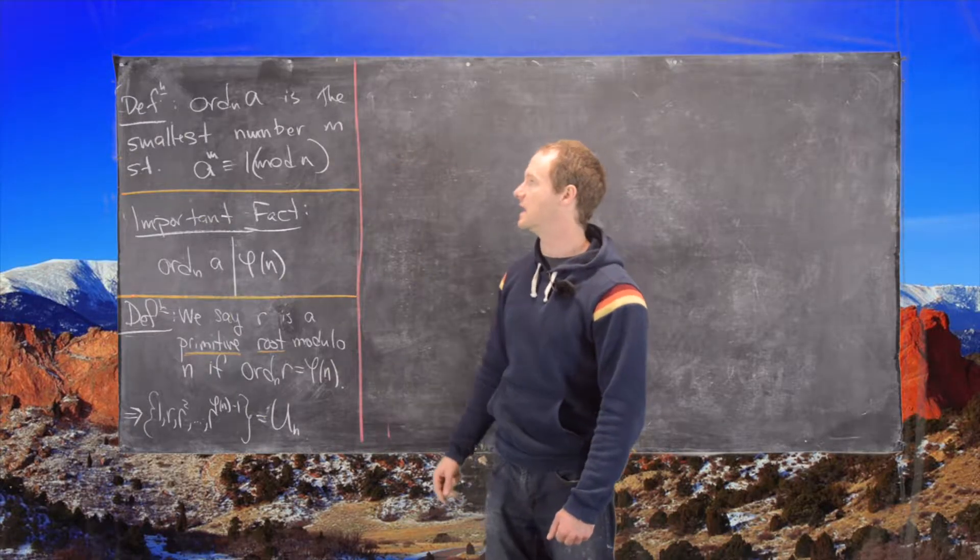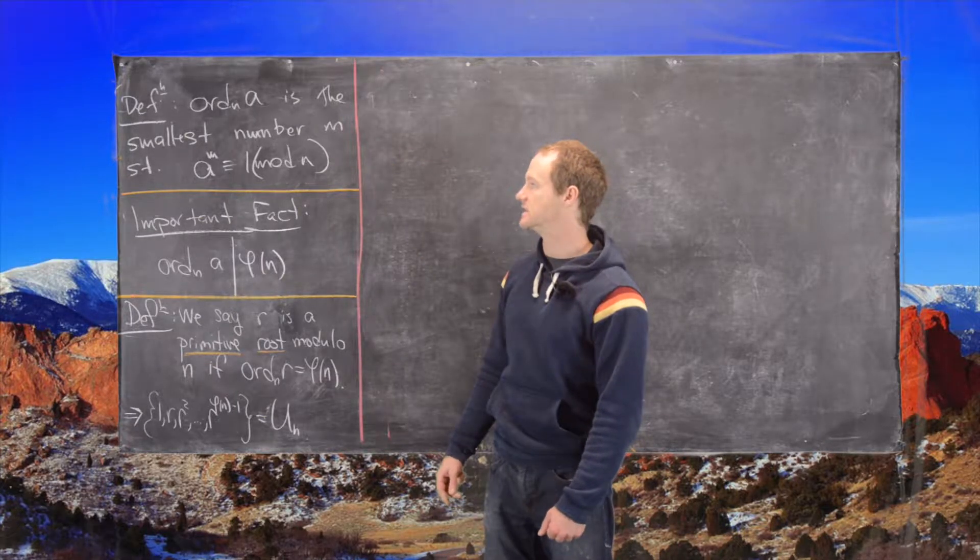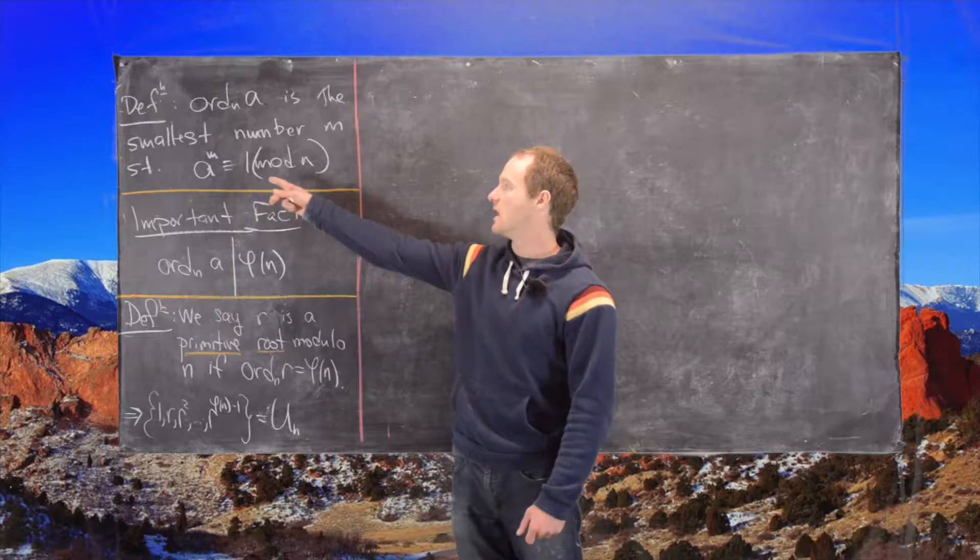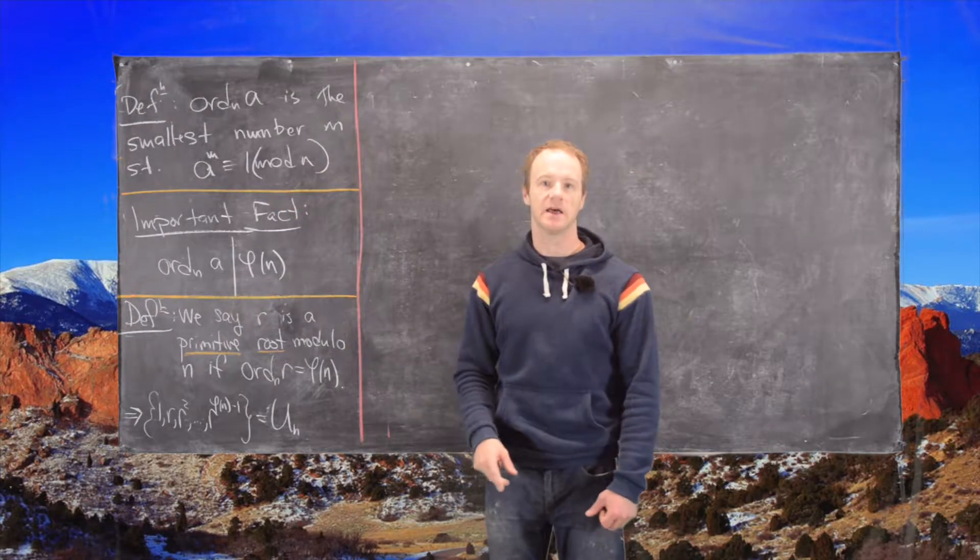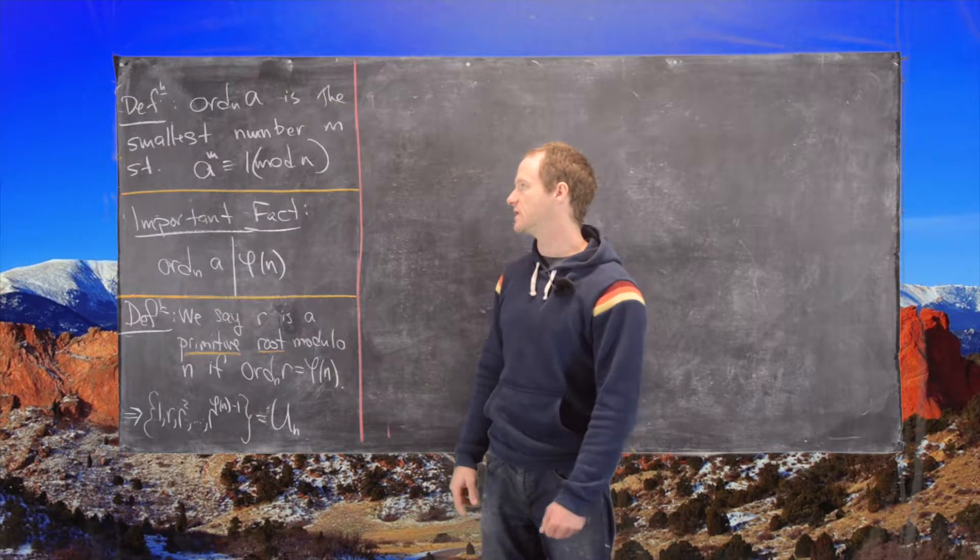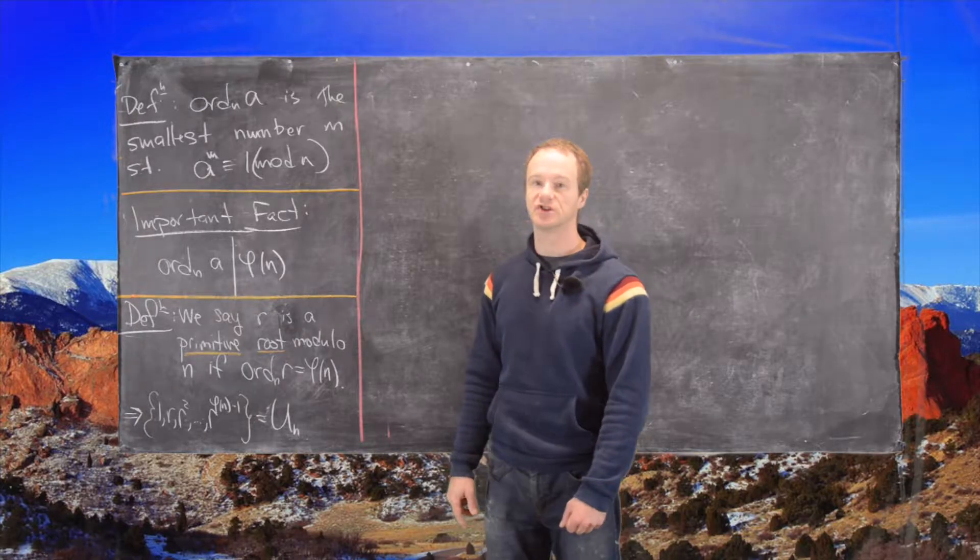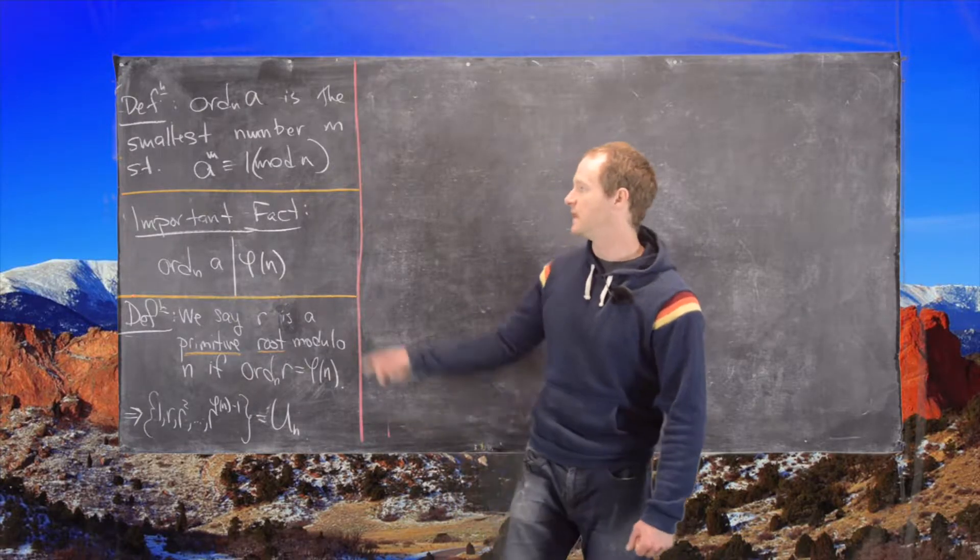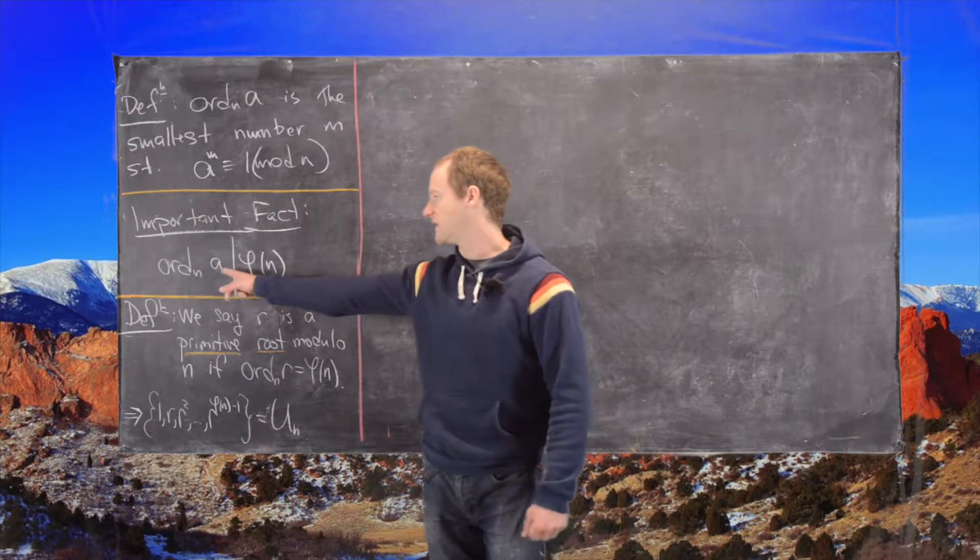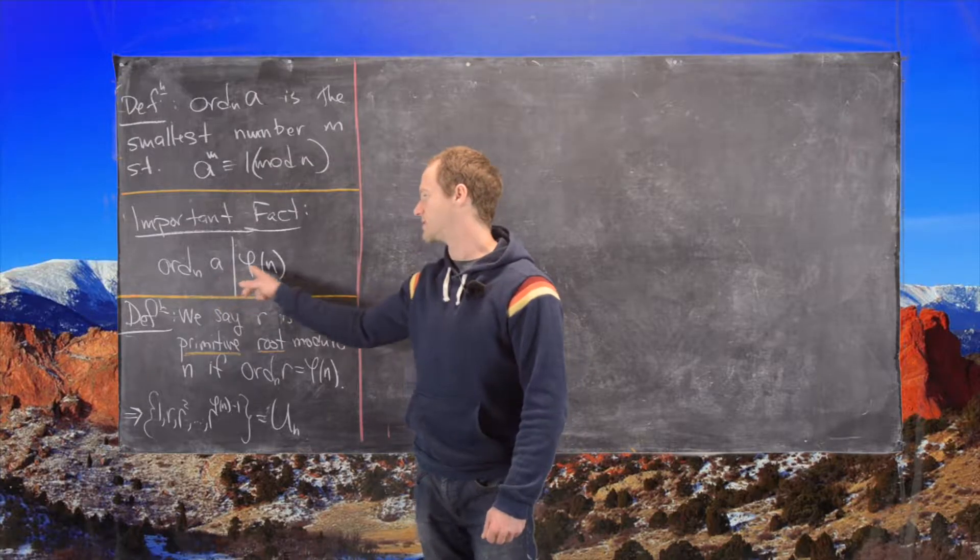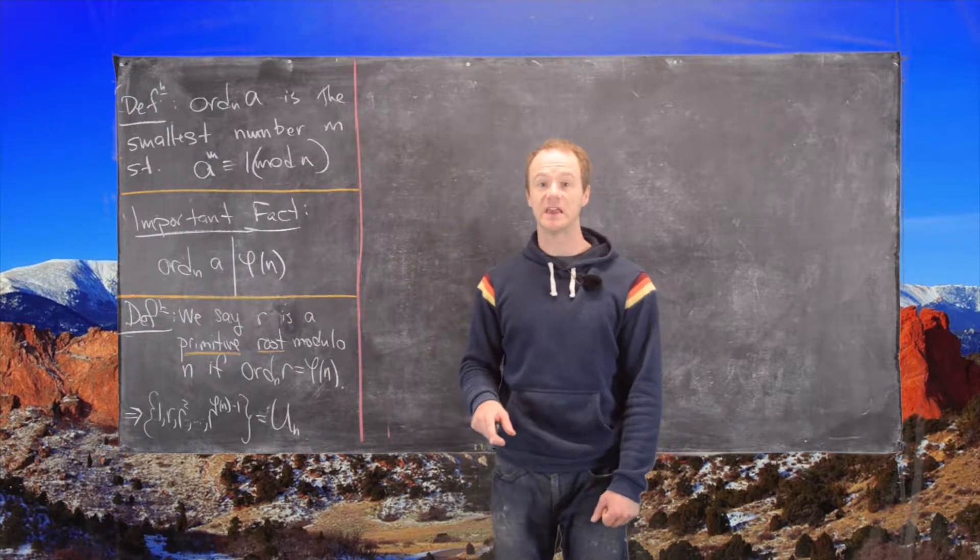The order of an element a modulo n is the smallest number m where a to the m is congruent to 1 mod n. And here we're generally taking the rule that the GCD of a and n is 1. Then we have this important fact that the order of a modulo n must divide phi of n, which makes phi of n like an upper limit for this order of an element.